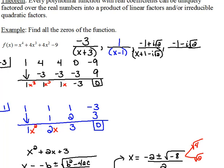And here again, we would say x minus a negative 1, which would be plus 1, and minus a negative, which would be plus i square root of 2.